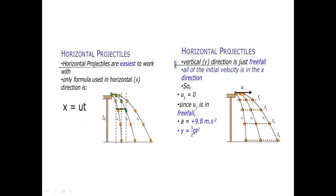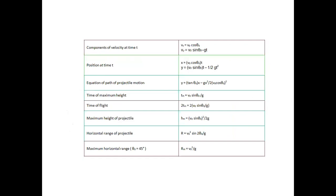In the horizontal direction, the only formula used is x equals ut. In the vertical direction, the displacement y is the vertical intercept, and uy equals zero because all initial velocity is in the x-direction — it is just a free fall. Since uy is zero and acceleration a equals 9.81 m/s², the formula s equals ut plus half at² reduces to y equals half gt².